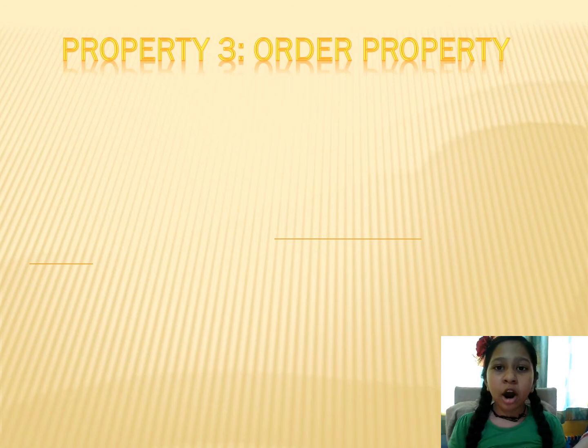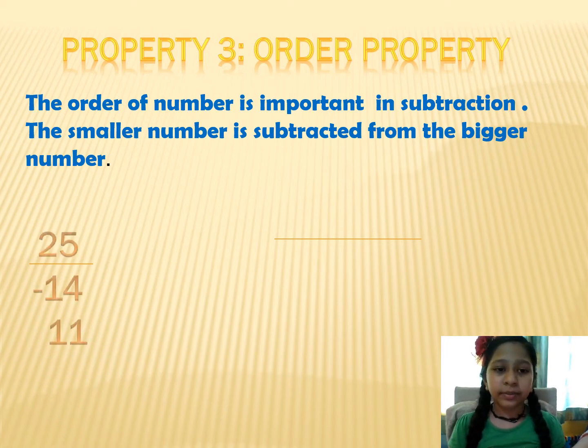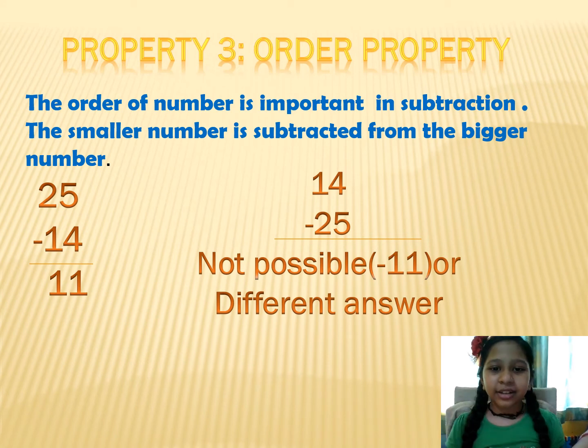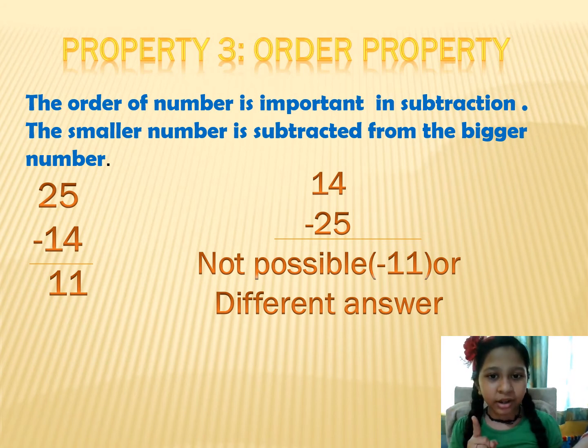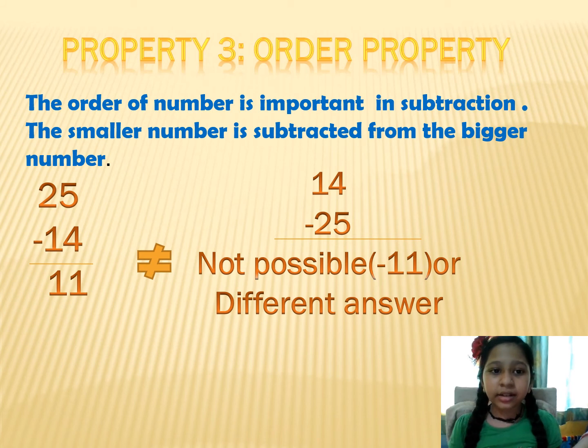Property 3. Order property. The order of the number is important in subtraction. The smaller number is subtracted from the bigger number. Like 25 minus 14 is equal to 11. But if we change the order, 14 minus 25 is not possible. That means 25 minus 14 is not equal to 14 minus 25.